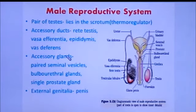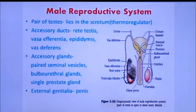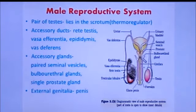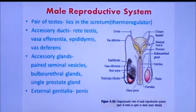Accessory glands include a pair of seminal vesicles on either side, a single prostate gland, and the bulbourethral gland — otherwise called the Cowper's gland — located below the prostate gland.